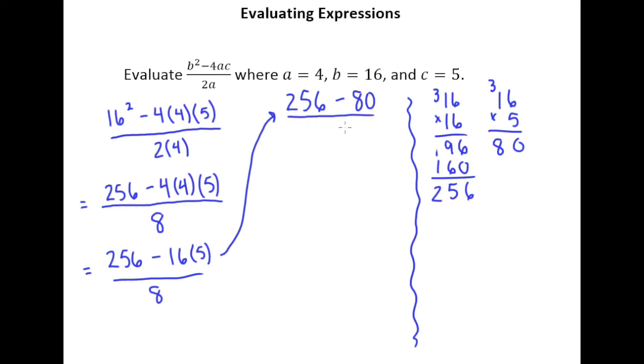So we have 256 minus 80 all over 8. I think I better do some vertical subtraction to figure out 256 minus 80. And I'll do some borrowing here.